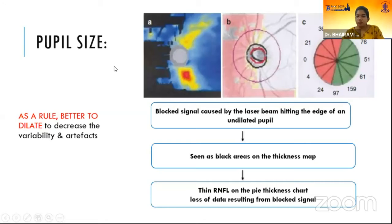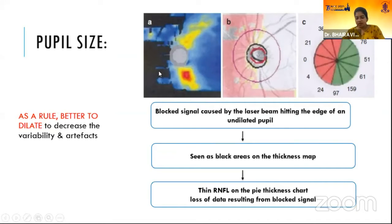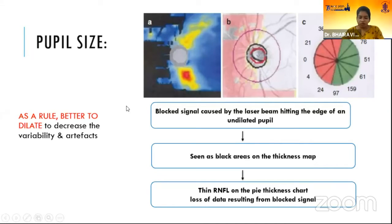A small pupil size may cause blocked signal due to the laser beam hitting the edge of the undilated pupil, which can be seen as black areas in the thickness map, resulting in loss of data and a thin RNFL in the pie thickness chart. Hence, as a rule, we should always dilate patients to decrease variability and artifacts.